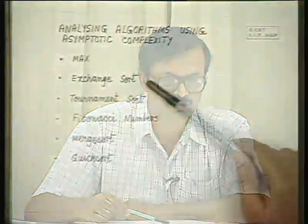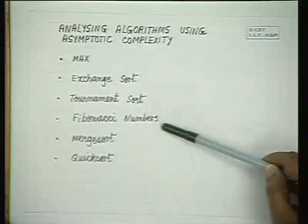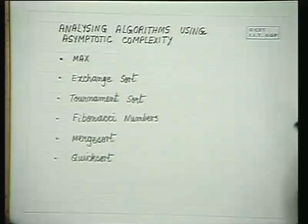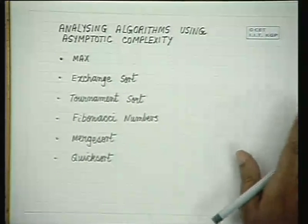We shall continue our study of asymptotic analysis of algorithms. Today, after having seen growth functions, the order notation, the upper bound and lower bound notations, we will now try and analyze some of the algorithms or programs we have written till now. We will pick up the maximum of N numbers, the exchange sort, the tournament sort, Fibonacci numbers, the merge sort and the quick sort. We have also done towers of Hanoi, permutations, and the stamps problem, which we shall come to when time permits.